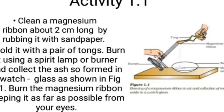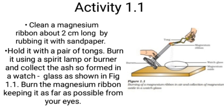Activity 1.1. Clean a magnesium ribbon about 2 cm long by rubbing it with sandpaper. Hold it with a pair of tongs. Burn it using a spirit lamp or burner and collect the ash so formed in a watch glass, as shown in figure 1.1.